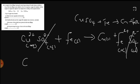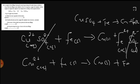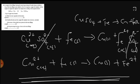What do we remain with? We remain with copper 2+ aqueous plus iron as a solid to form copper as a solid and iron 2+ as an ion. So that is an ionic equation for this reaction.